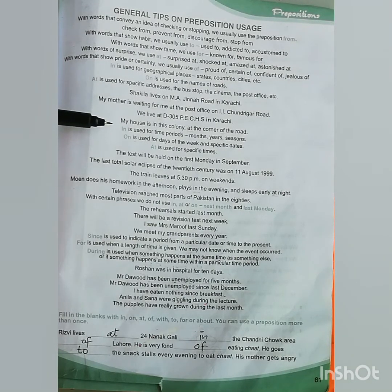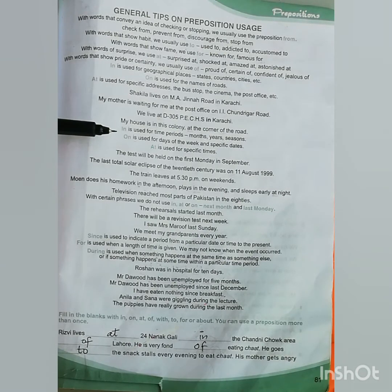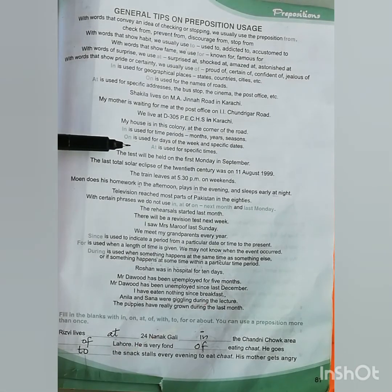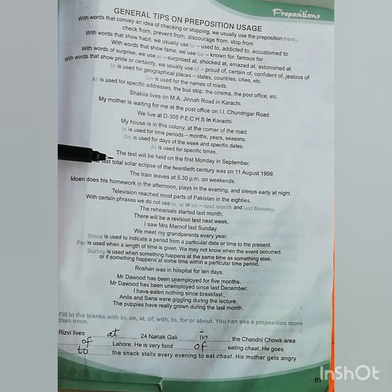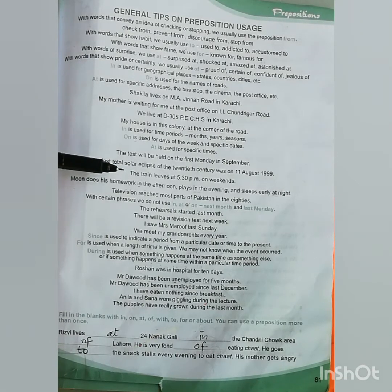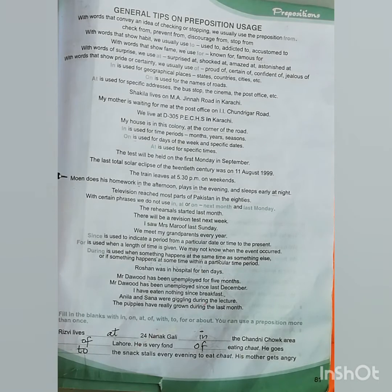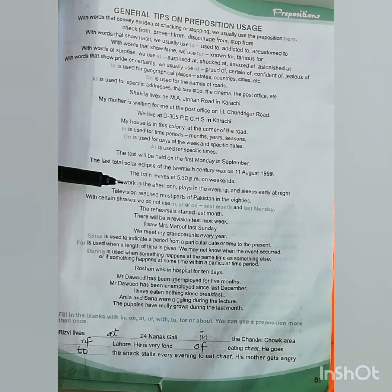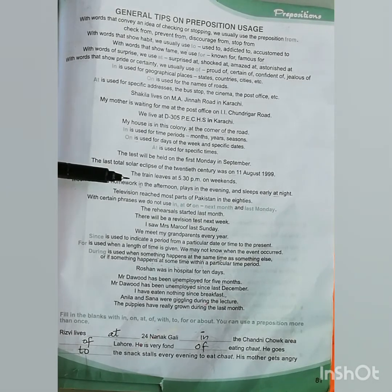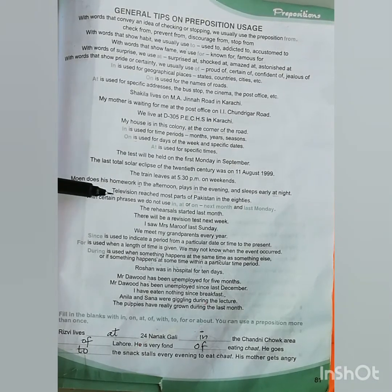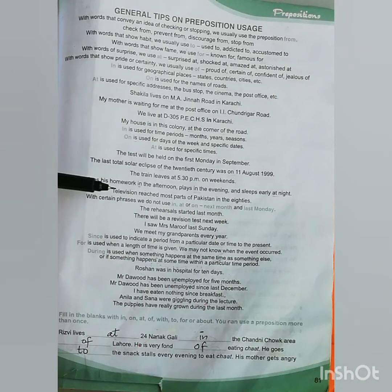'In' is used for time periods — months, years, seasons. 'On' is used for days of the week and specific dates. 'At' is used for specific times. For example: the test will be held on the first Monday in September. The last total solar eclipse of the 20th century was on 11th August 1999. The train leaves at 5:30 p.m. on weekends. Moin does his homework in the afternoon, plays in the evening, and sleeps early at night. Television reached most parts of Pakistan in the 80s.